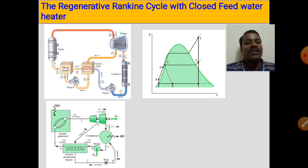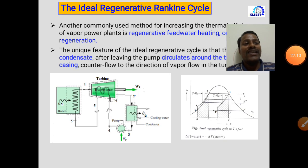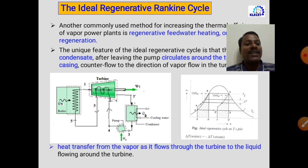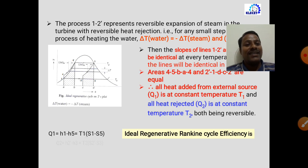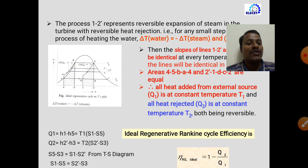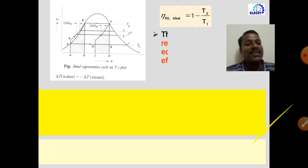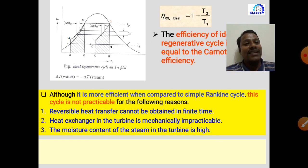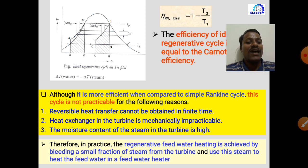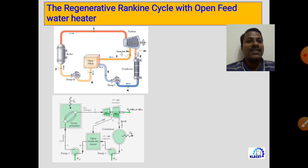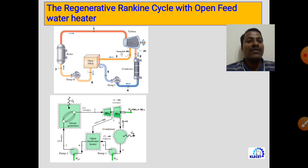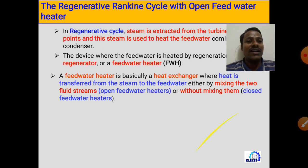In this lecture, we discussed the ideal regenerative Rankine cycle — its schematic diagram, T-S diagram, and efficiency derivation, which showed efficiency almost equal to the Carnot cycle. We also discussed the limitations of the ideal regenerative Rankine cycle, and to overcome those difficulties, we introduced regenerative feed water heating. We then understood the functioning of both the open feed water heater and the closed feed water heater.